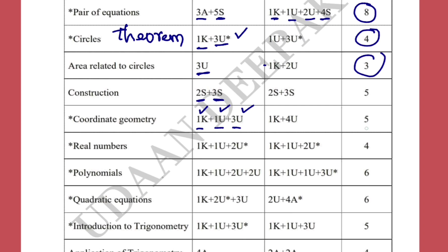In Real Numbers, you can get a four-mark question: one knowledge-based, one understanding, and a two-mark understanding question. Polynomials will again come for six marks — one knowledge-based objective question, two-mark questions to find the sum and zeros of a polynomial with verification, and a two or three-mark question on the long division method.